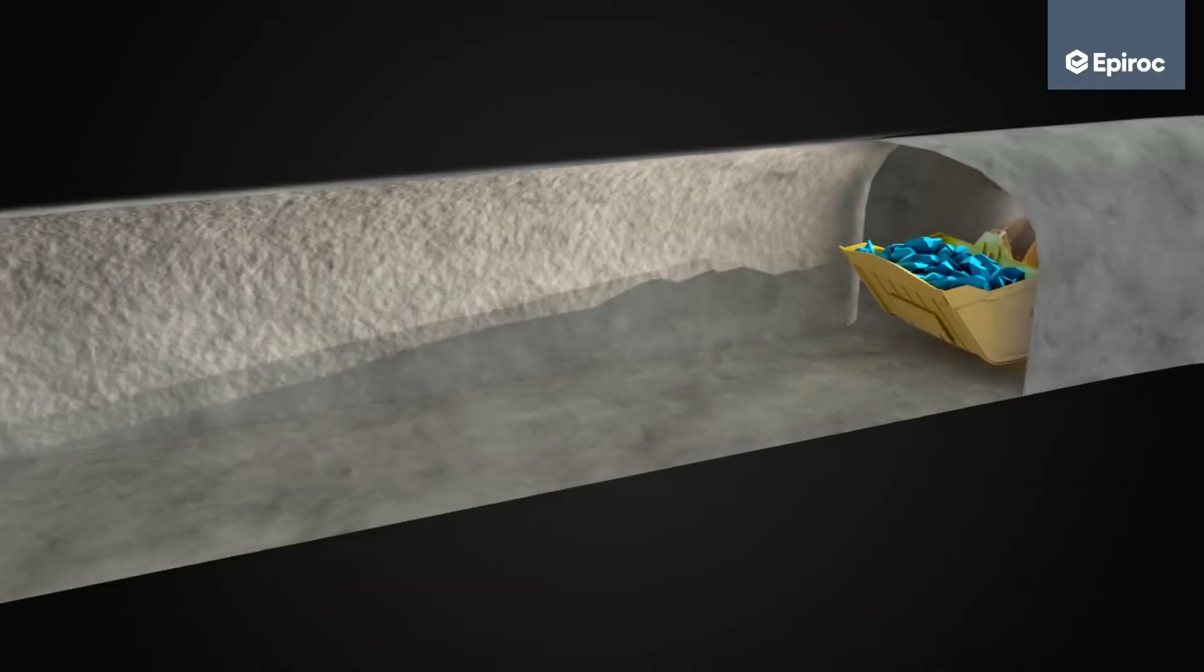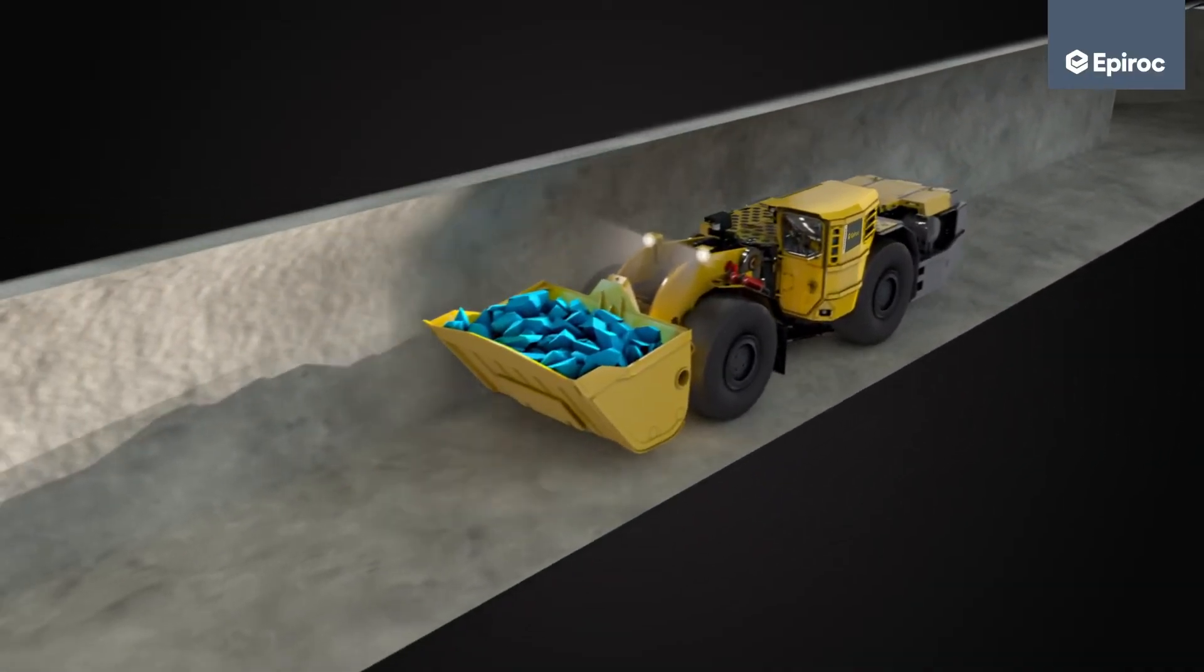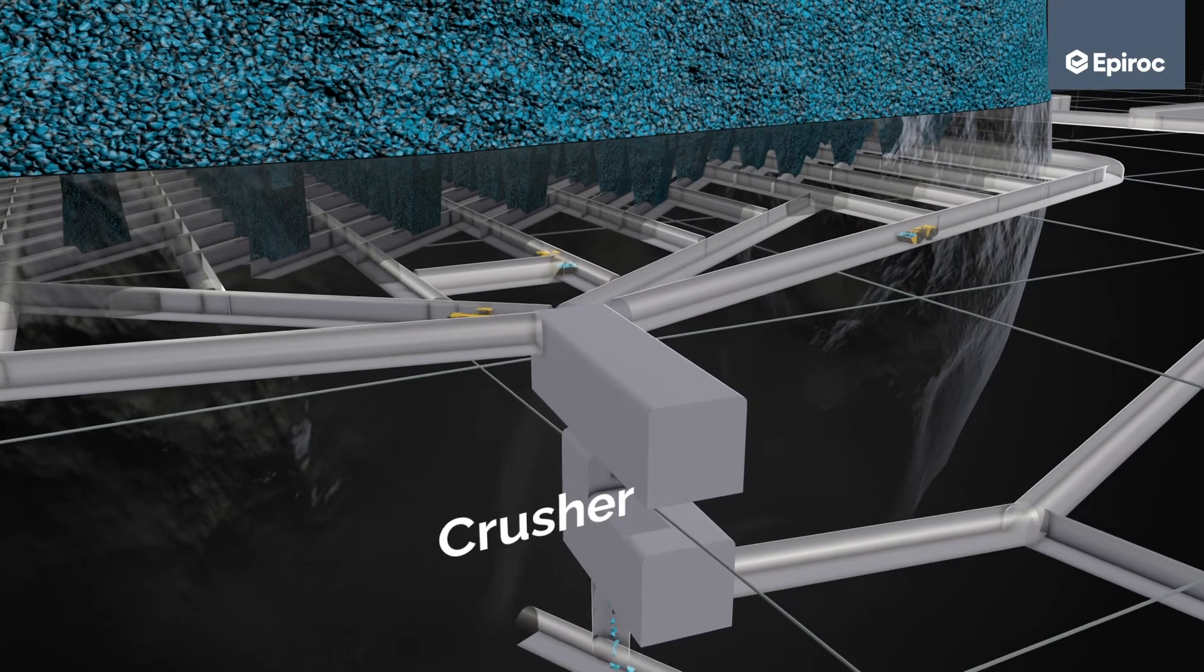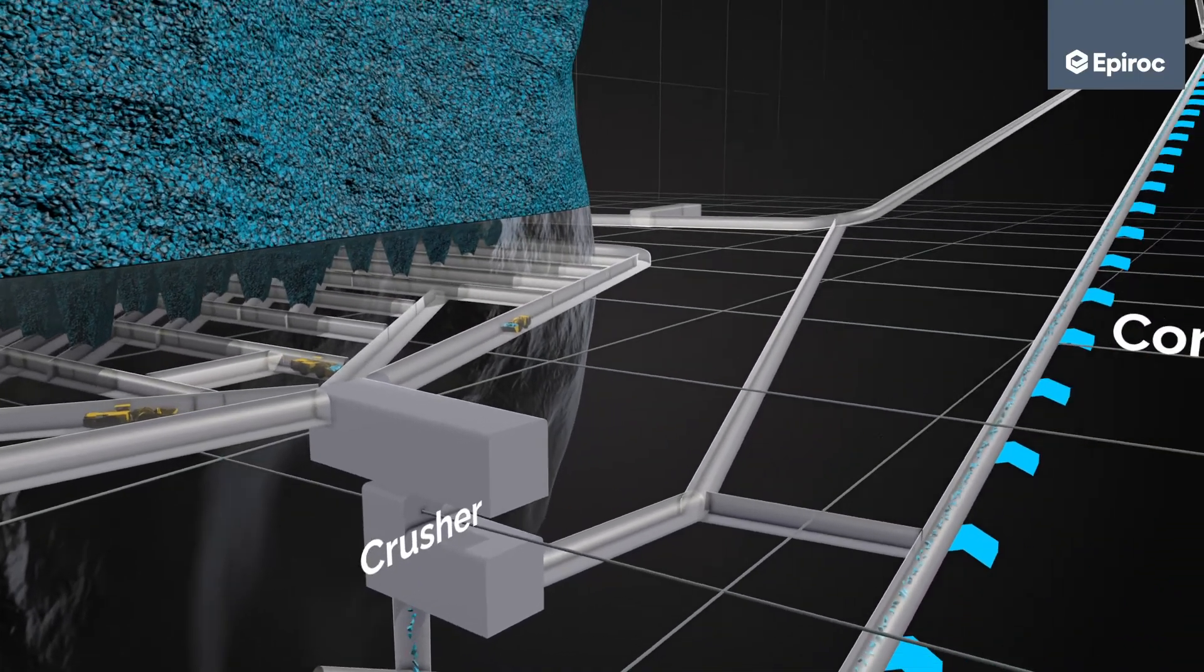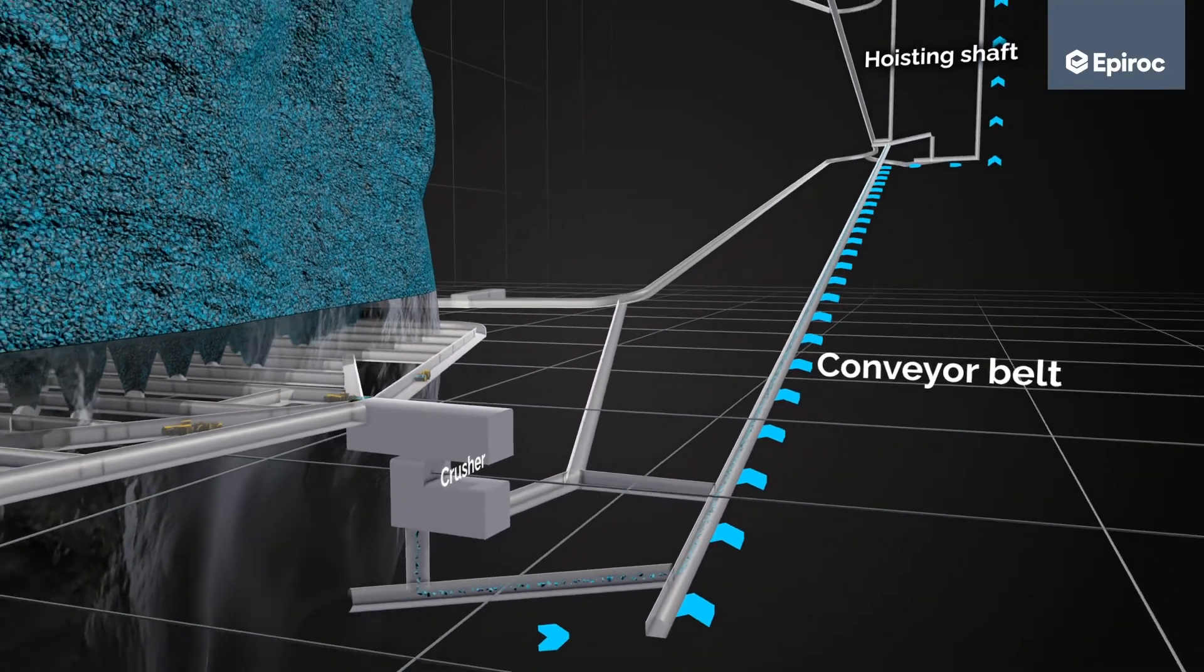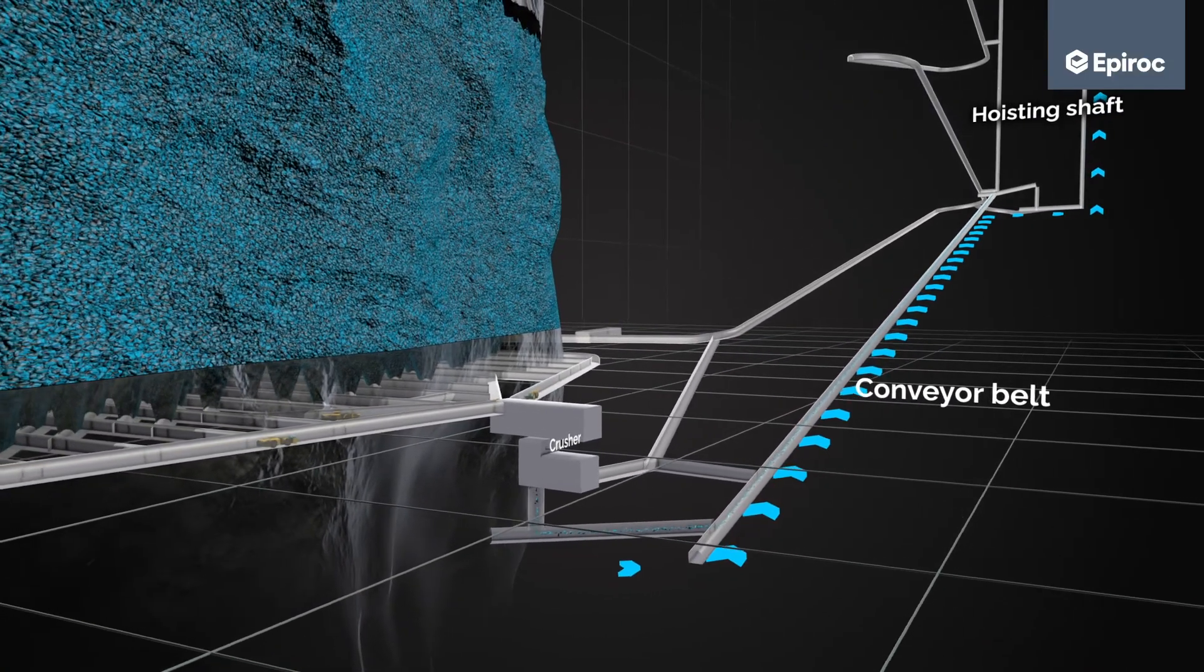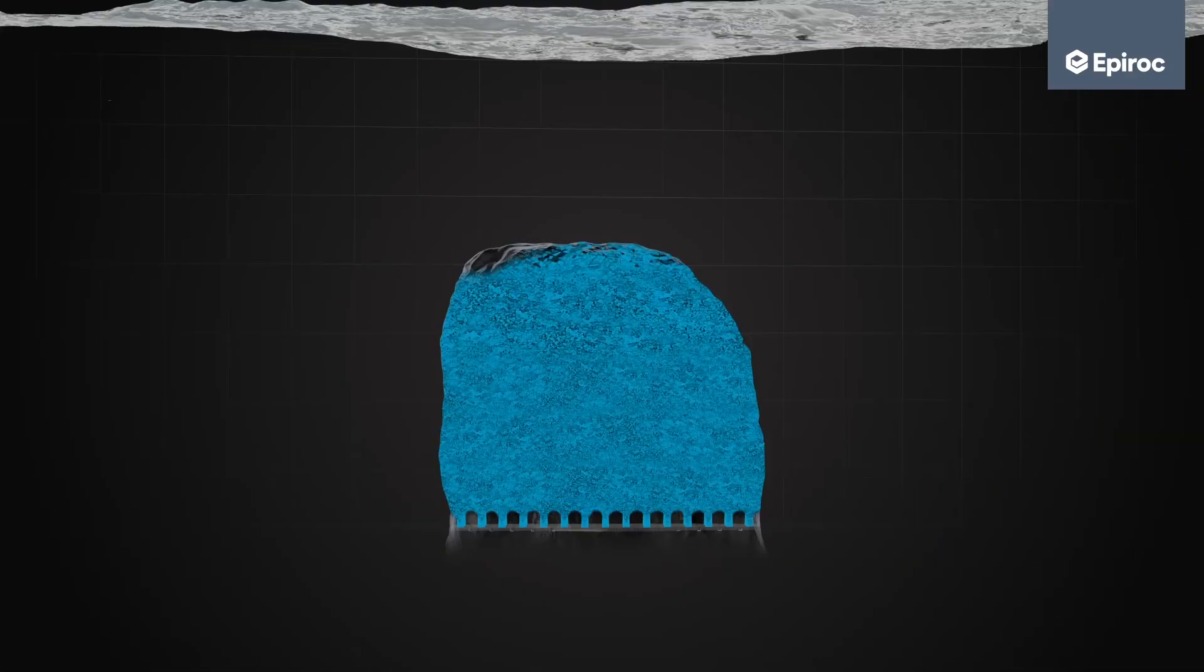Rock is loaded from the draw points and can be dumped into ore passes connected to a haulage level or directly into a crusher. A variety of transportation methods can be employed for transporting ore to surface. The fragmentation of the ore and the crushing requirements are key factors influencing the choice of method.